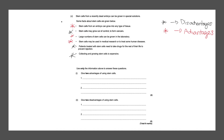Two advantages would be: stem cells from an embryo can grow into any type of tissue, and large numbers of stem cells can be grown in the laboratory — that gives you your two marks. The two disadvantages could be: stem cells may grow out of control to form cancers, and patients treated with stem cells need to take drugs for the rest of their life to prevent rejection — that gives you your two marks.